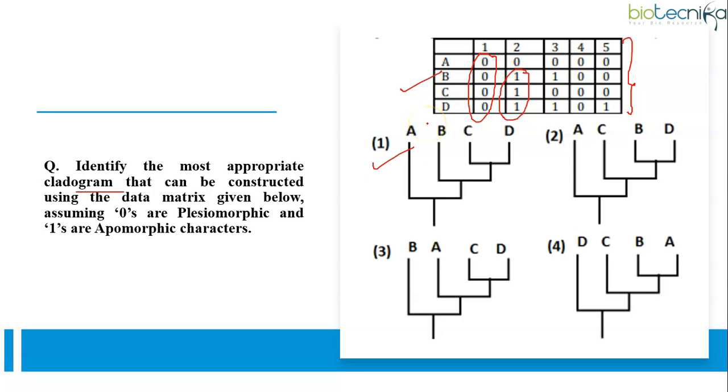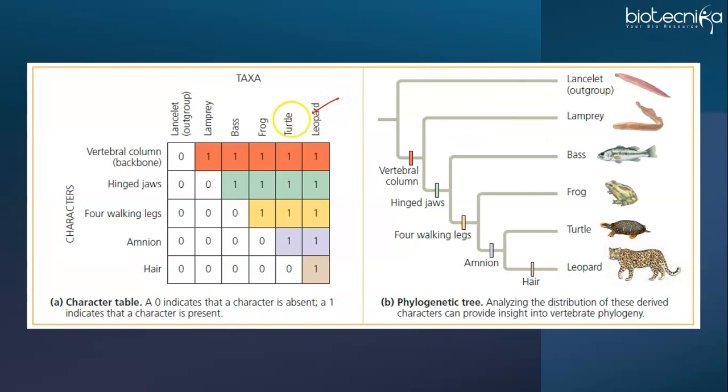For this, like how cladograms are generated or this data matrix or character table is generated and analysis is done, let's consider the set of characters for each of 5 vertebrates. A leopard, turtle, frog, bass fish and lamprey which is a jawless aquatic vertebrate. As a basis of comparison, we need to select an outgroup. What is outgroup? An outgroup is a species or group of species from an evolutionary lineage that is known to have diverged before the lineage that includes the species we are studying, that is, the in-group.